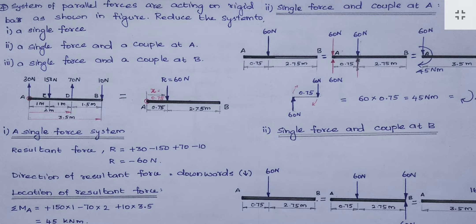We have to reduce the system. They are giving three parts: first, reduce the system to a single force; second, reduce to a single force and a couple at A; and third, reduce it to a single force and a couple at B. So how do we solve this?